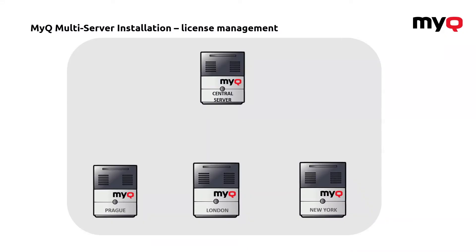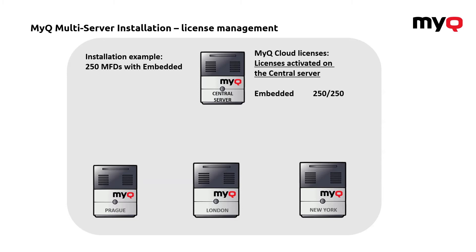Like in previous cases, we've got a central server and three different sites. I've bought a set of 250 licenses for the enterprise — that way I can have 250 MFDs with the embedded terminal. All these licenses are activated on the central server, meaning we're no longer checking the hardware of each individual site, because everything is activated against the database of your central server. So I've got 250 licenses, 250 embedded available on the central server.